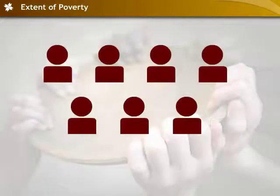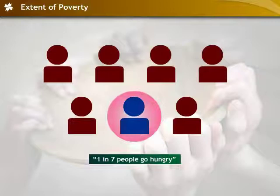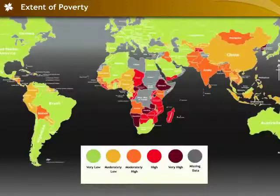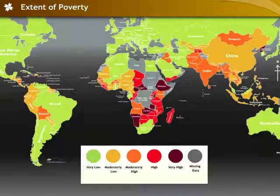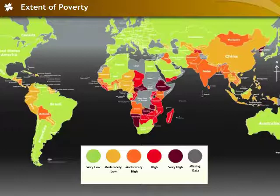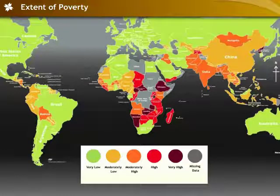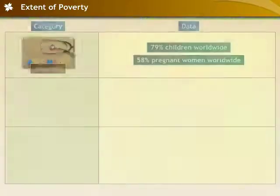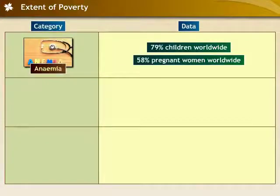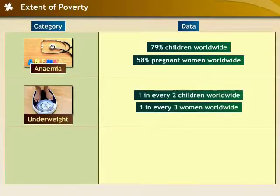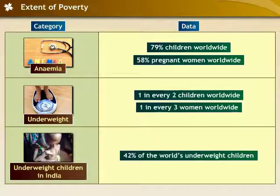The findings of the index reveal that 1 in every 7 people sleep hungry. Of the list of 84 countries prepared in 2010, India was ranked 67 on the hunger index. Recent family health surveys have revealed that 79% of children and 58% of pregnant women are anemic. 1 in every 2 children and 1 in every 3 women are underweight, and 42% of the world's underweight children are in India.